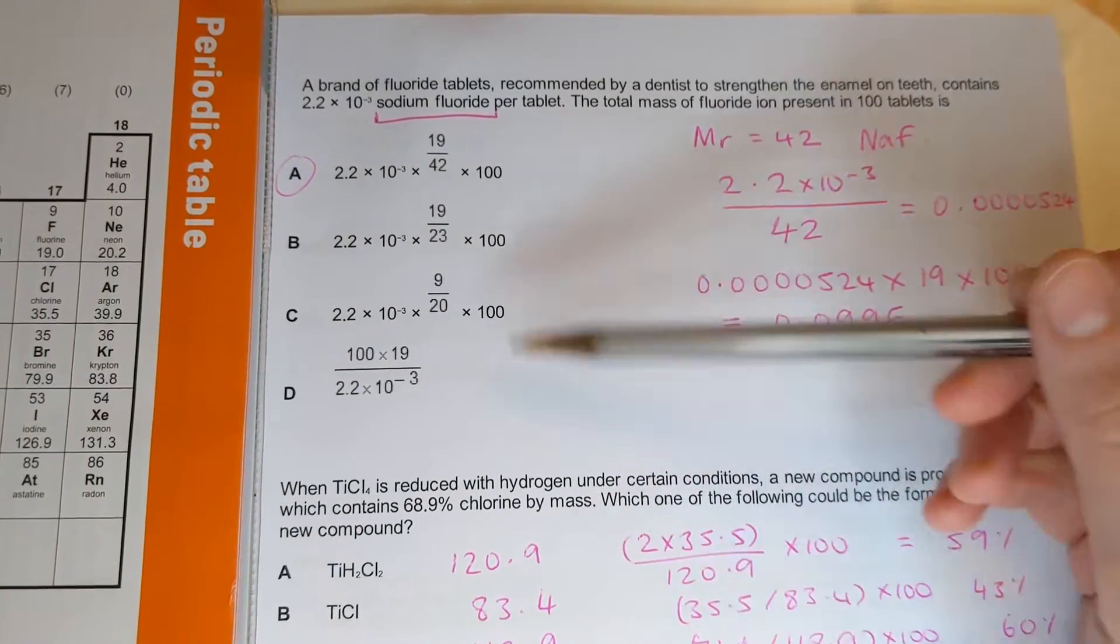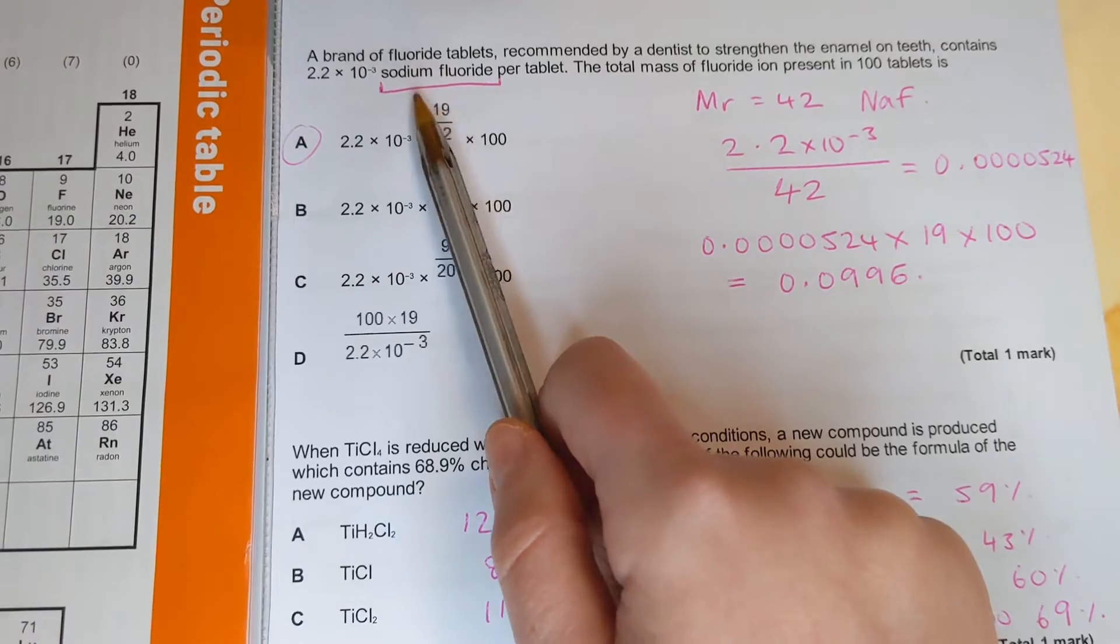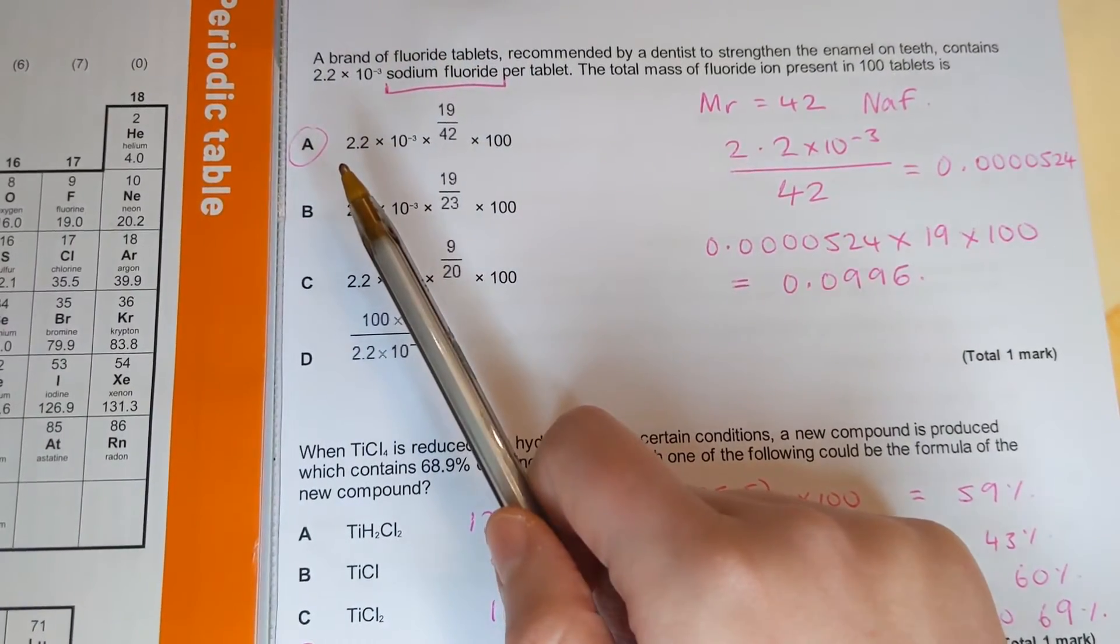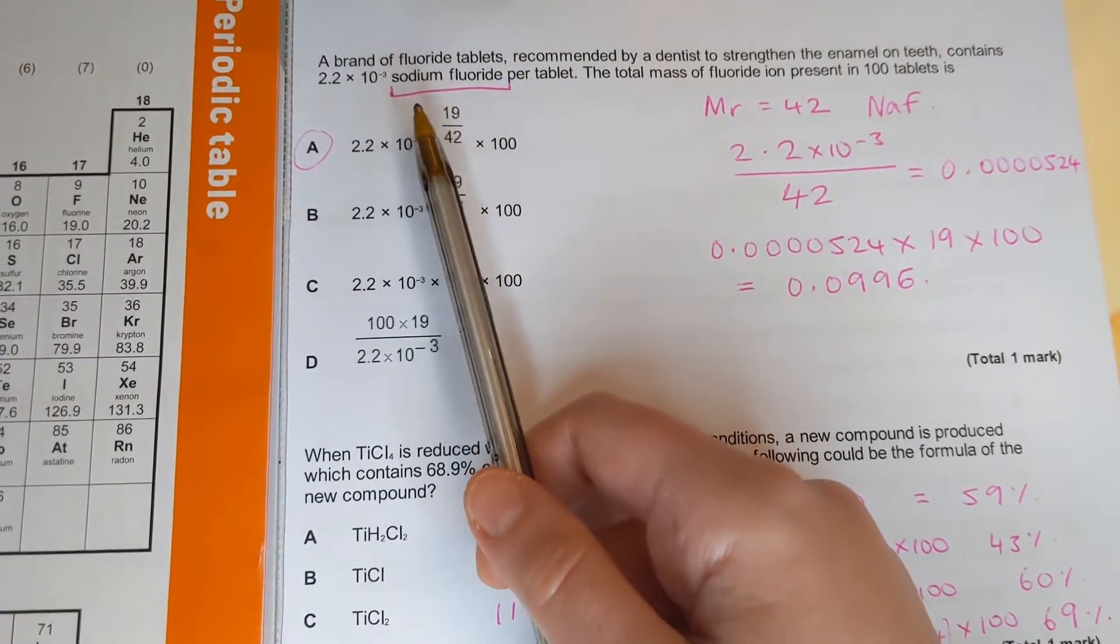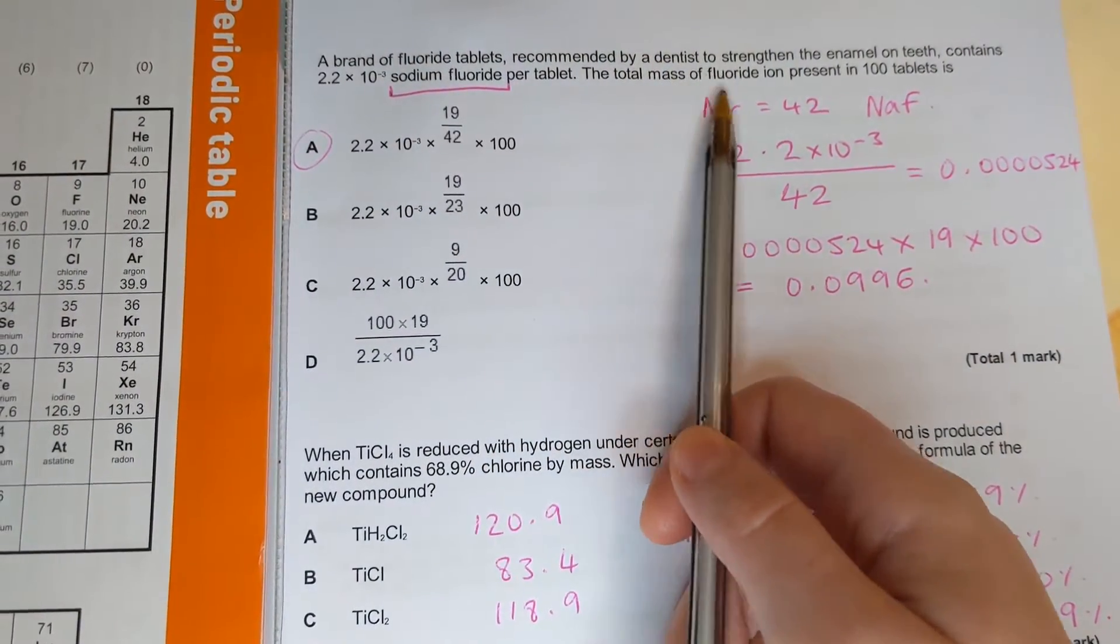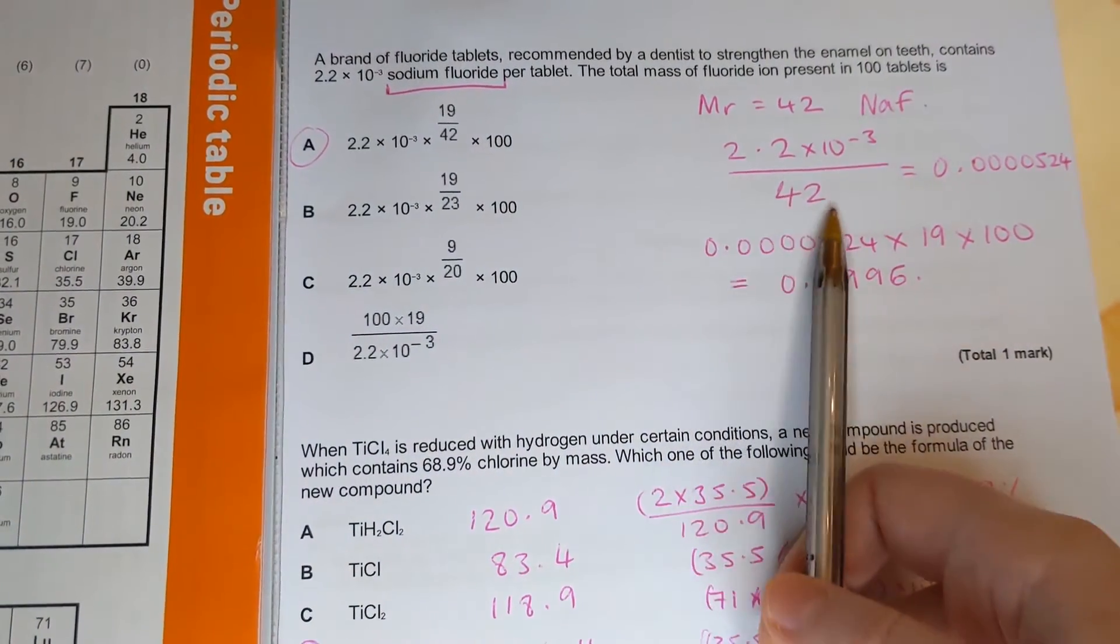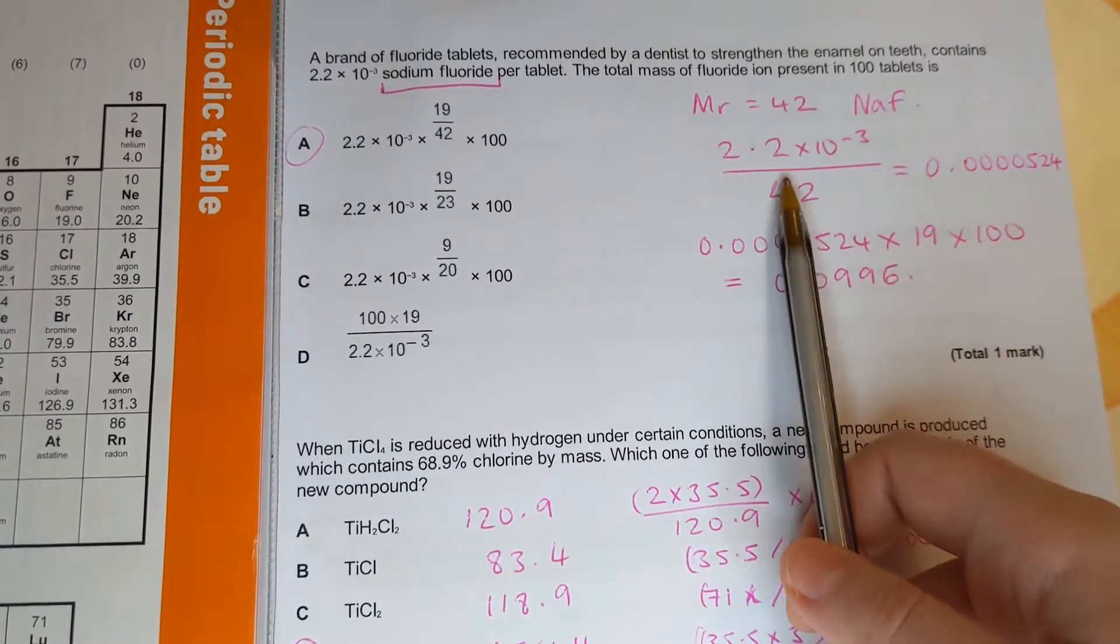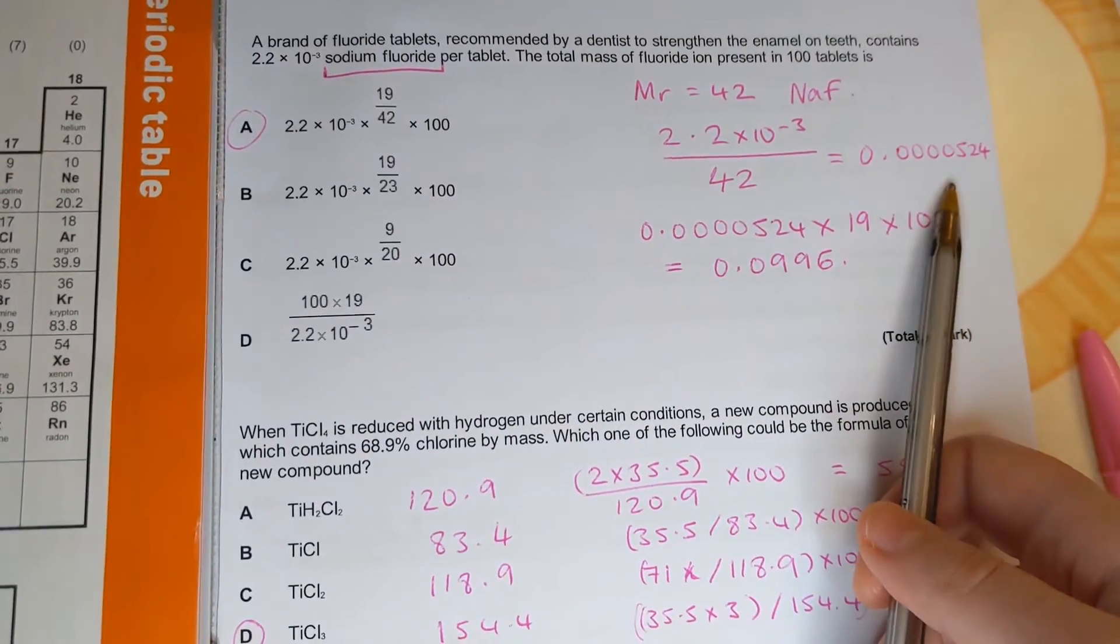The first logical step would be to calculate the molar mass of this sodium fluoride using the periodic table and you should get 42. The next thing I'm going to do since it wants just fluoride by itself, I'm going to divide this amount by the molar mass of sodium fluoride because I want to get rid of the sodium and I'm just interested in the fluorine. So I came out with this number.